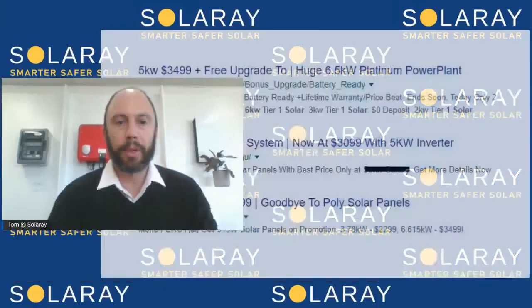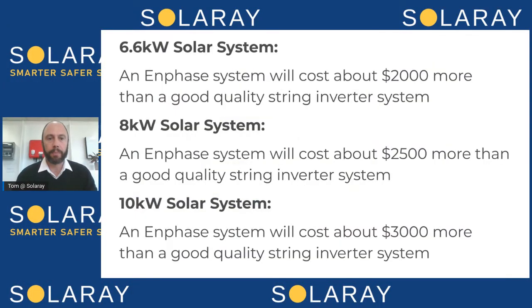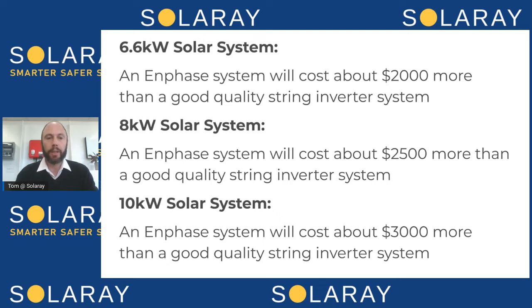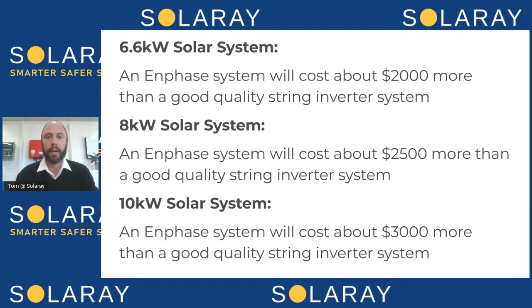Looking at a price comparison slide: on a 6.6-kilowatt system, an Enphase system is going to be about $2,000 more. On an 8-kilowatt system, an Enphase system is going to be about $2,500 more. And on a 10-kilowatt system — which is roughly as large as you would go with a string inverter on a family home — you're looking at about a $3,000 price difference.